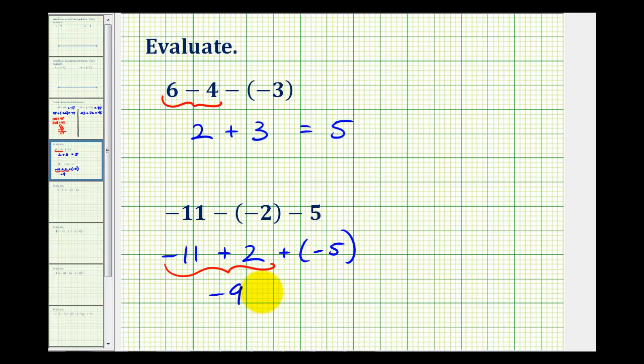So we have negative nine plus negative five. And now when we add integers with the same sign, we'll add their absolute values and keep the sign. So this would be negative fourteen.